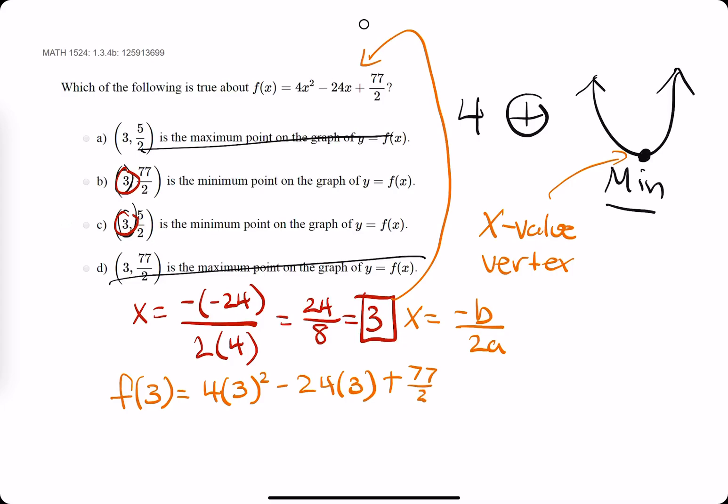Let's talk about 77 over 2 real quick just so we don't have to deal with a fraction. So, 77 divided by 2, we could say 76 divided by 2 is 38, so we can say 38.5 for that fraction. So, keep working this out. We get 4 times 9 minus 24 times 3, which is 72, plus now we'll bring in the 38.5.